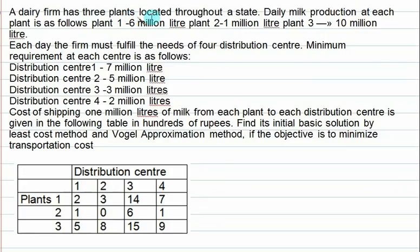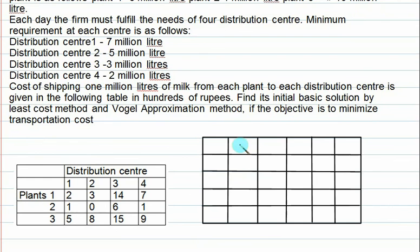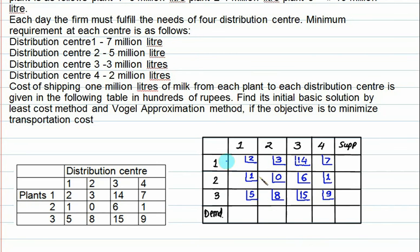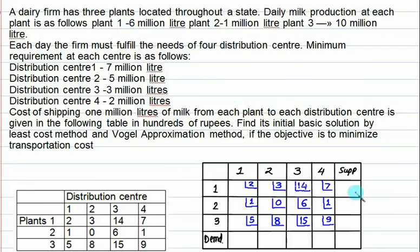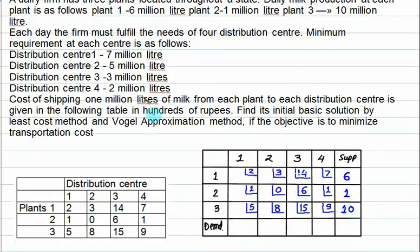A dairy firm has 3 plants located across the state. Daily milk production: plant 1 = 6 million liters, plant 2 = 1 million liters, plant 3 = 10 million liters. The firm must fulfill needs of 4 distribution centers with minimum requirements of 7, 5, 3, and 2. Total supply equals total demand, so this is a balanced transportation problem.